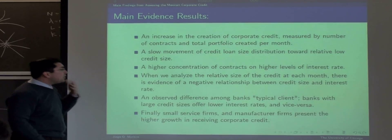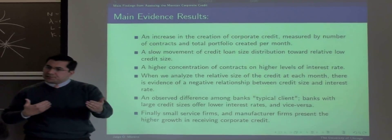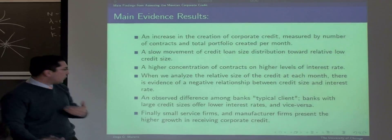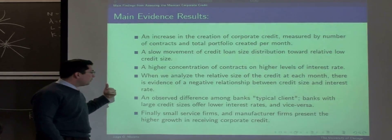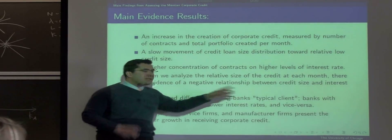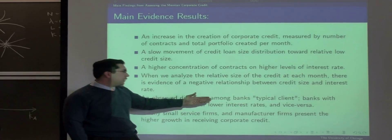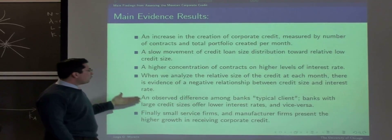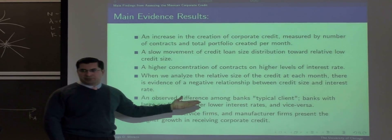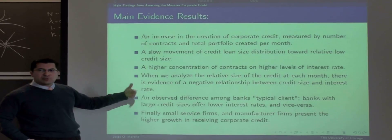We have evidence of the negative relationship between credit size and interest rate. But also, differences about the banks and the typical client, measured by the median client, in terms of credit sizes and interest rates. And the negative relationship reserves.